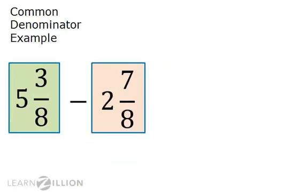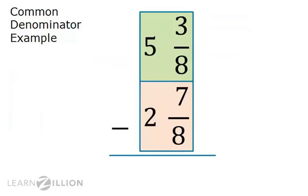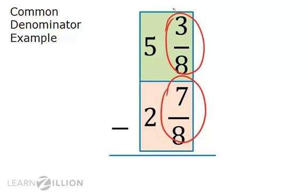We'll return to our 5 and 3 eighths. From that, we will subtract 2 and 7 eighths. In order to regroup easily, we will rewrite the fractions vertically. Now we will start on the right, much like other times we subtract using place value.